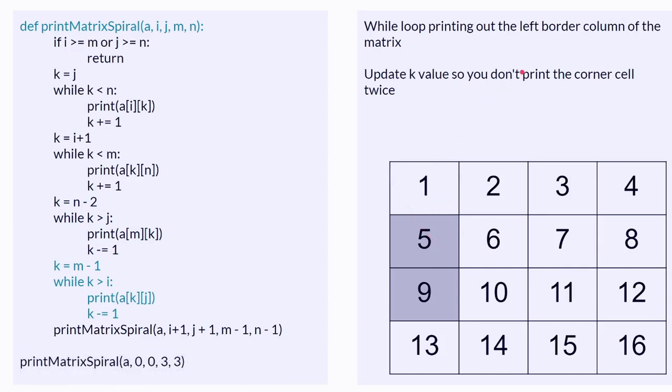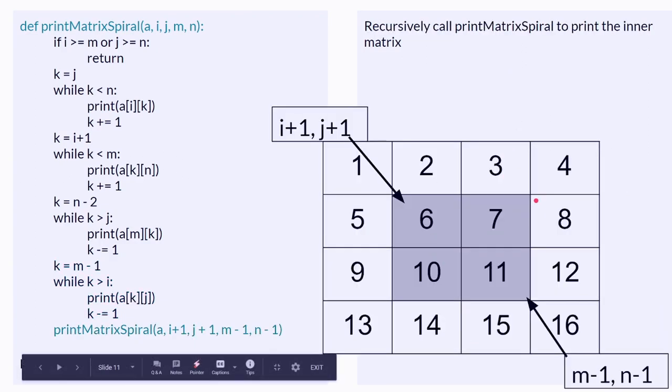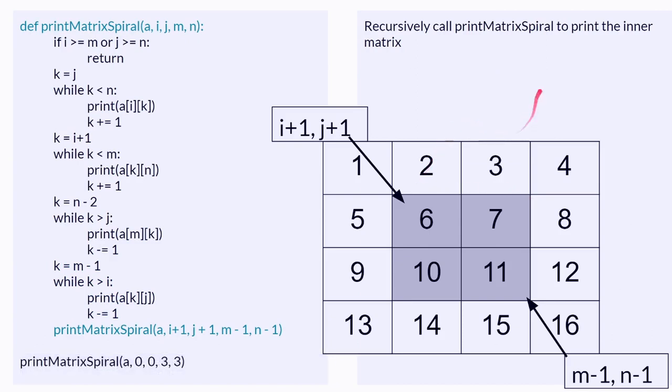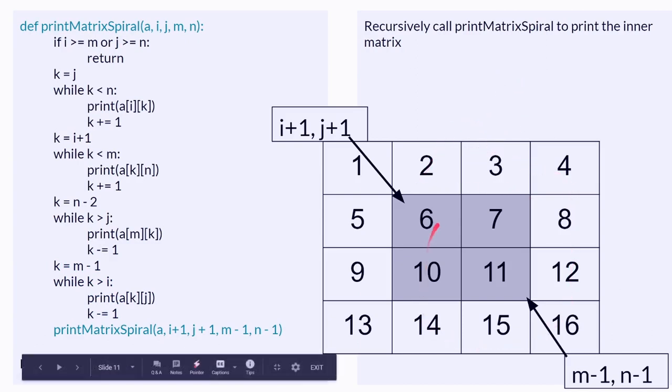And then for the last one, you print the left border column. And then you recursively call the matrix spiral and print the inner matrix.